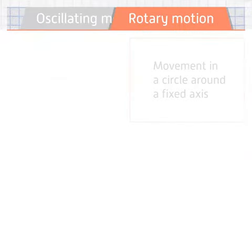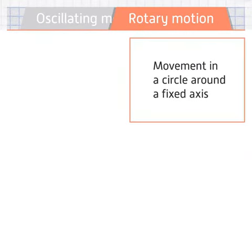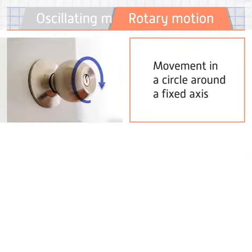Rotary motion is movement in a circle around a fixed axis. A common example of rotary motion is a door knob being turned.